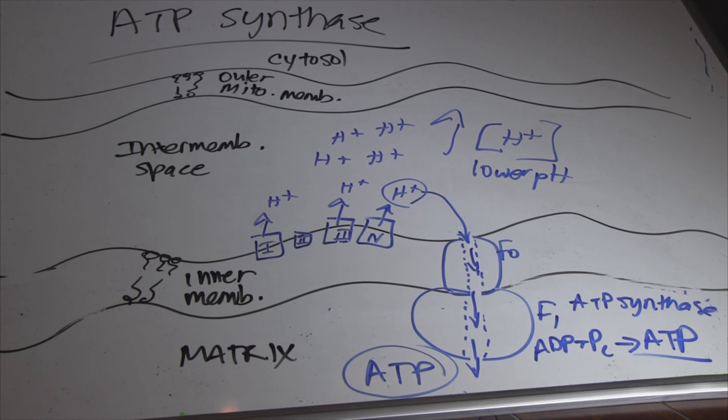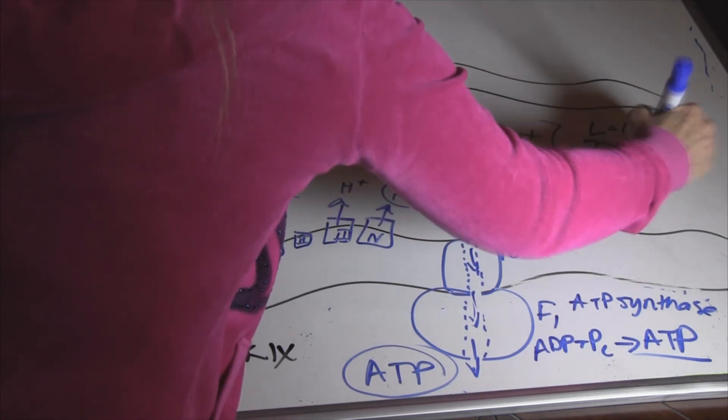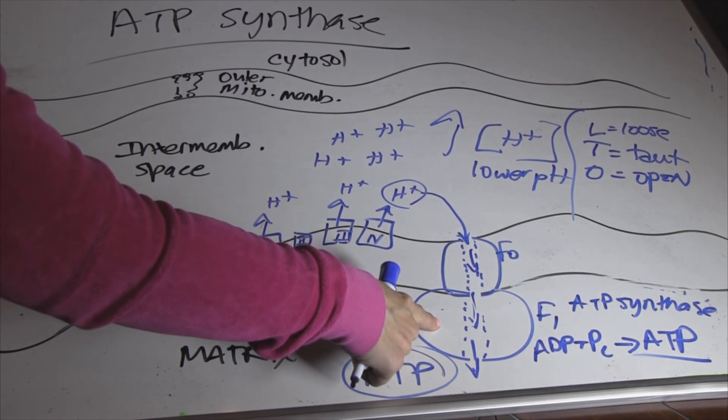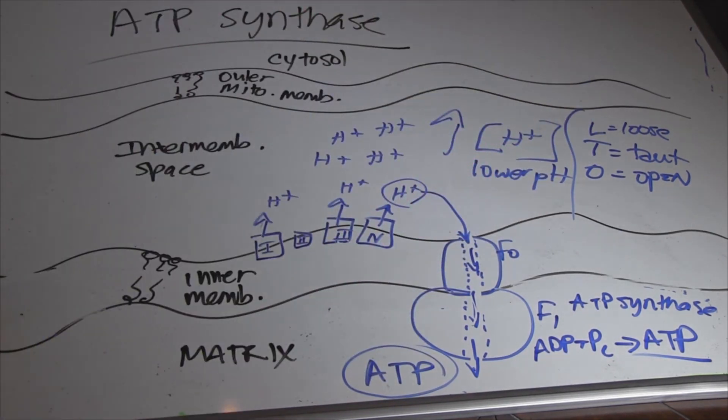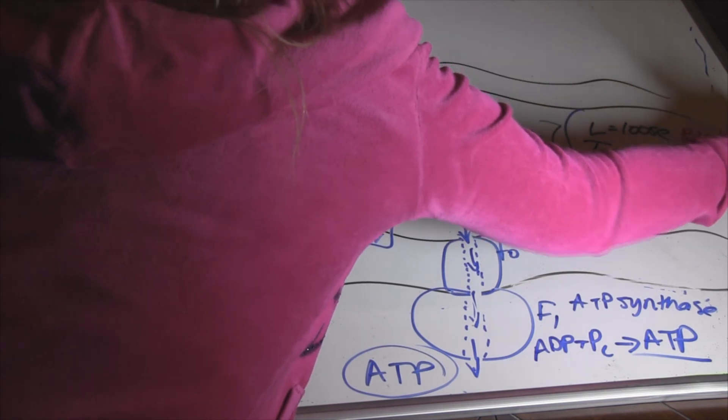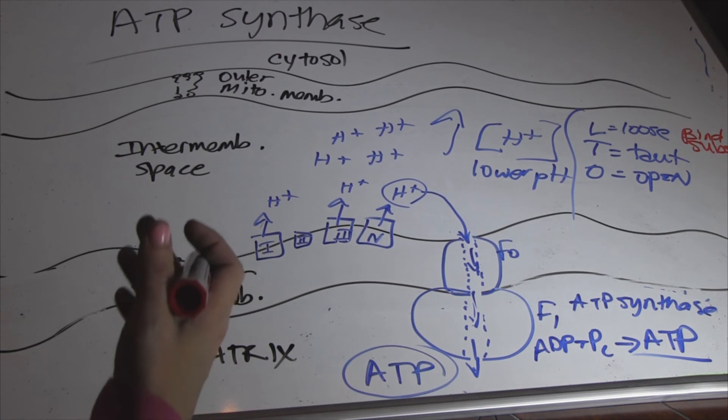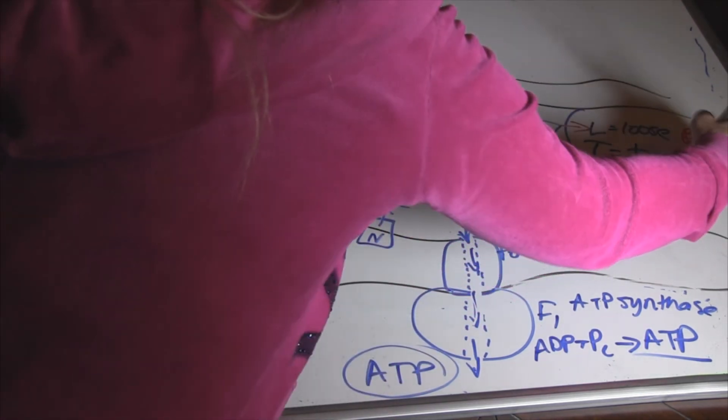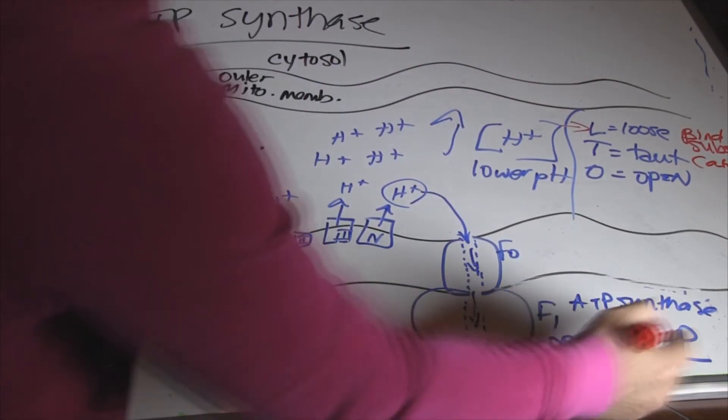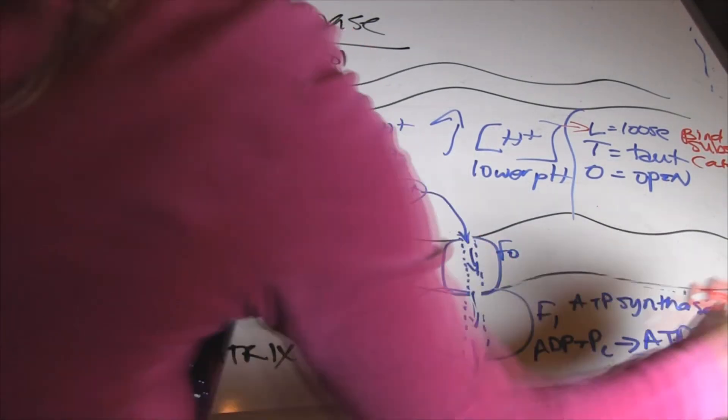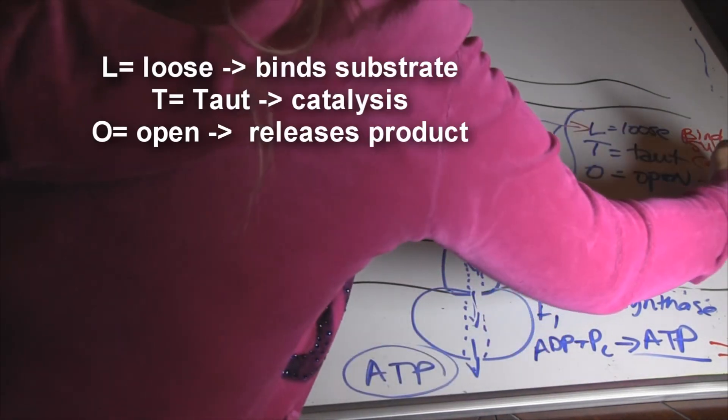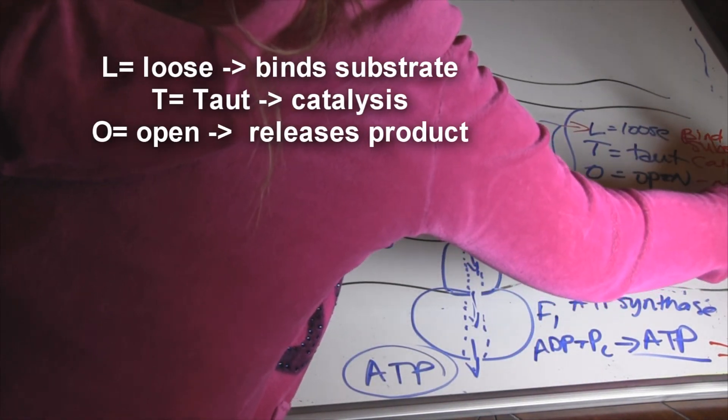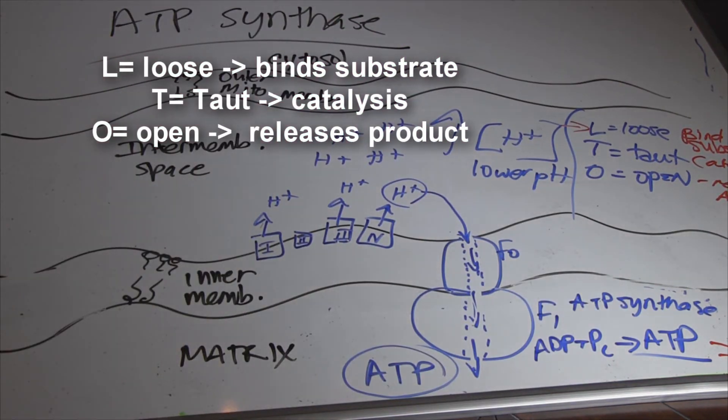We are going to be creating a bunch of ATPs that are going to be dumped in the matrix. And I'm about to go over the numbers with you. But to simplify this, there's going to be three conformational states. We have L, T, and an O. These are the three different shapes that this F1 unit will undergo. The loose is going to be binding substrate. So the ADP and the inorganic phosphate will come in at the loose conformation. Then we have the tight. This is where the magic happens. So this is going to happen in the T conformation. Then the open releases ATP. To the matrix specifically.